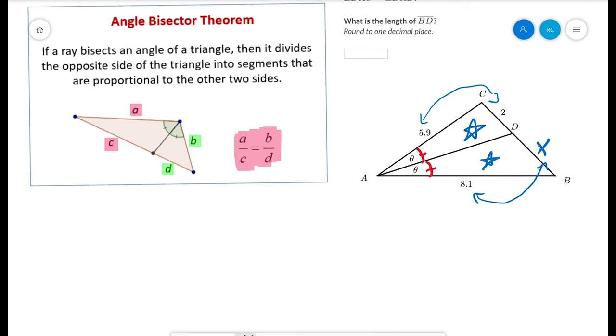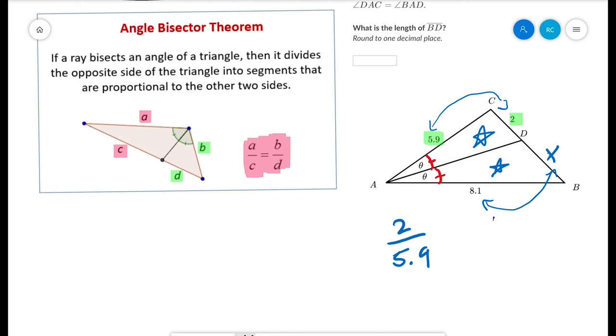So we can really jump directly to the end and say that 2 over 5.9, that's 2 over 5.9, and x over 8.1. As you can see, I did the small side over the big side. And those two proportions should be equal.